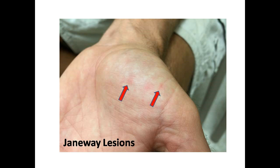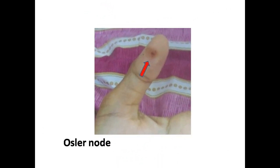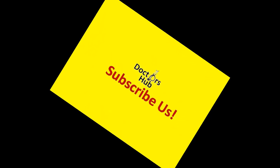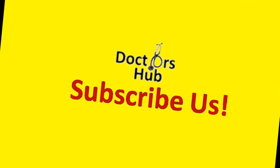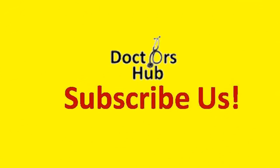Osler Nodes are immunologic phenomena where deposition of immune complexes provoke an inflammatory response leading to swelling, redness, and pain. On the contrary, Janeway Lesions are embolic phenomena in the cutaneous blood vessels, which does not cause pain.